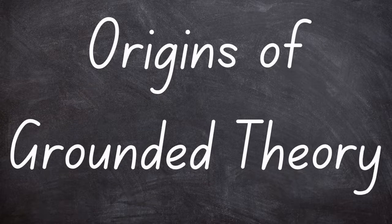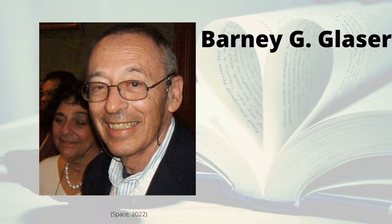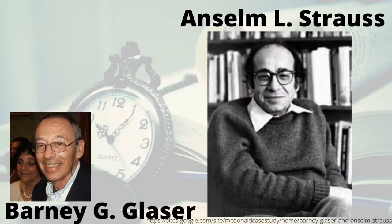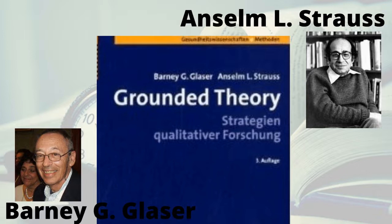Some history and background of grounded theory is necessary to fully understand the transformation and expansion of the method. Grounded theory was developed by two sociologists in the late 1960s, Barney G. Glaser and Anselm L. Strauss. They studied terminally ill patients and published their research methods, which then led to them writing their groundbreaking book, The Discovery of Grounded Theory, published in 1967.